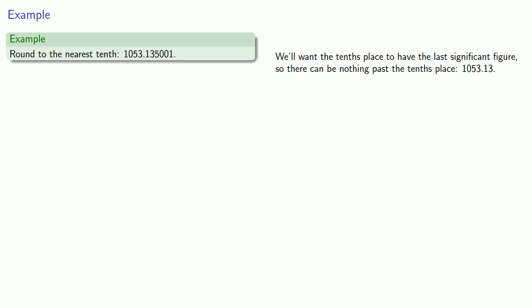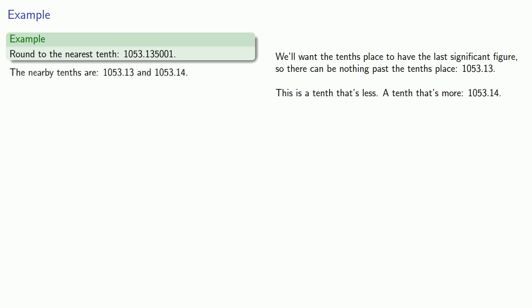This is a tenth that's less than our number. We want a tenth that's more, so we go to the next one: 1053.2. The nearby tenths are 1053.1 and 1053.2, and the one that's closer is 1053.2.